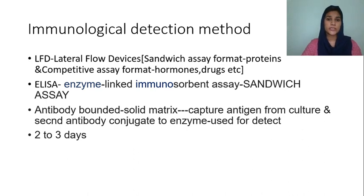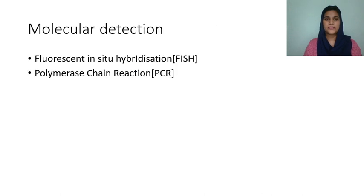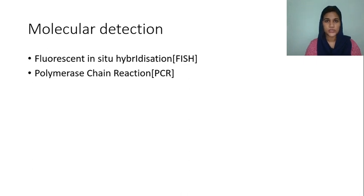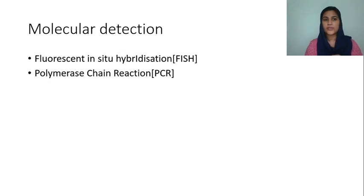Then comes Molecular Detection of Contaminants. We will learn fluorescent in-situ hybridization — that is FISH — and Polymerase Chain Reaction, which is very important. Different types of detection methods exist for GM foods, pesticides, and other contaminants. We will focus on FISH and PCR.